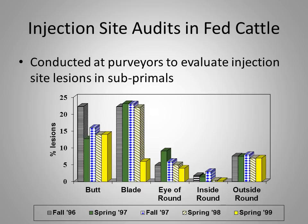Therefore, we as an industry conducted injection site audits in subprimals — pieces of meat — and looked deep into the muscle tissue for injection site scars. These surveys started in the fall of 1996 and continued until the spring of 1999. We looked at various subprimals: the butt is the top hip where your sirloin steaks come from; the blade is the neck area where you get blade roasts and steaks; and the round is the back thigh, which includes the eye of round, inside round, and outside round.